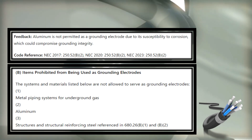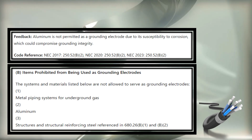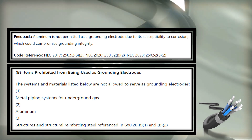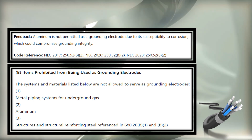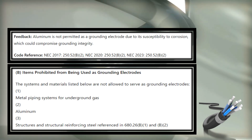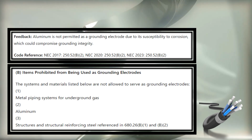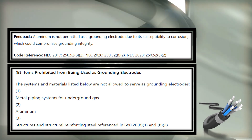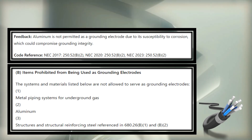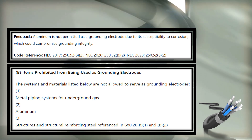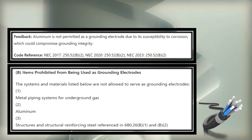And then structures and structural integrity of reinforced steel, and the steel that is referenced in 680.26 — which is our pool equipotential bonding grid — we're not allowed to use any type of the pool structure as part of our grounding electrode system.